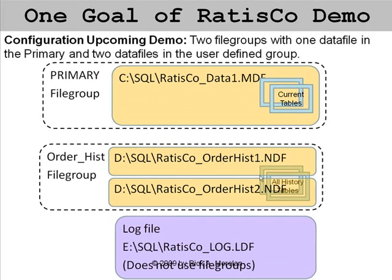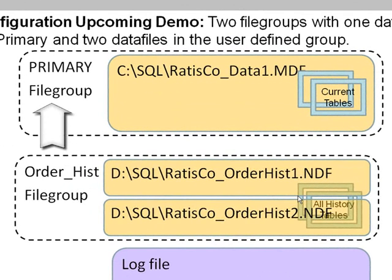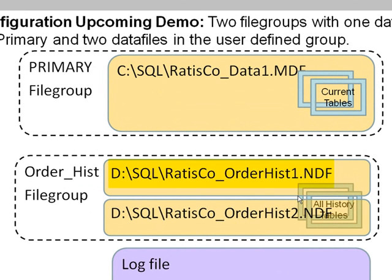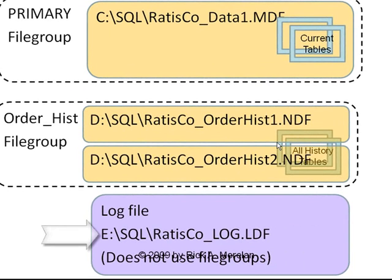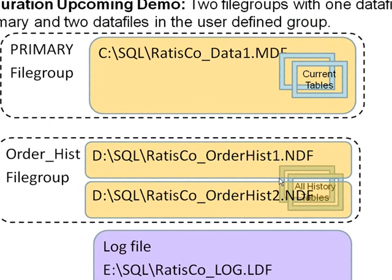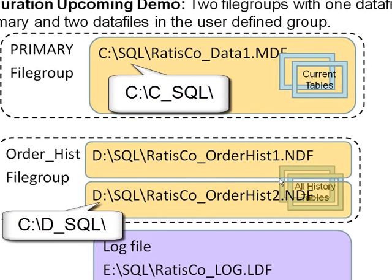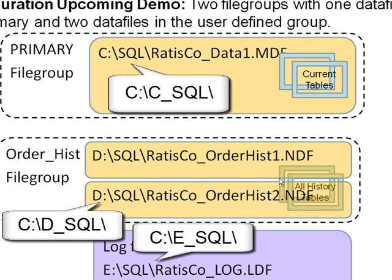The goals of the upcoming demonstration are: have a primary file group with one main data file; create a user-defined file group called orderhist with two secondary data files. The D drive SQL folder will have radiscoe_orderhist1 and radiscoe_orderhist2 secondary files. On the E drive, the SQL folder will hold radiscoe_log.ldf. Since the practice machine likely doesn't have C, D, and E drives, we'll use folders named C_SQL, D_SQL, and E_SQL to simulate those drives and practice specifically placing files upon database creation.